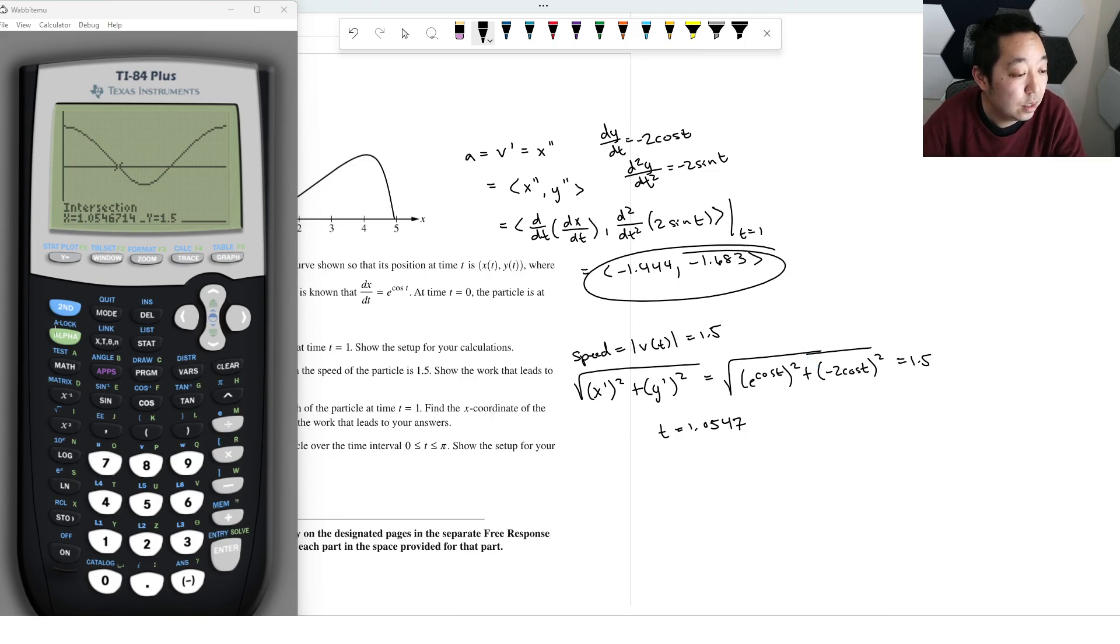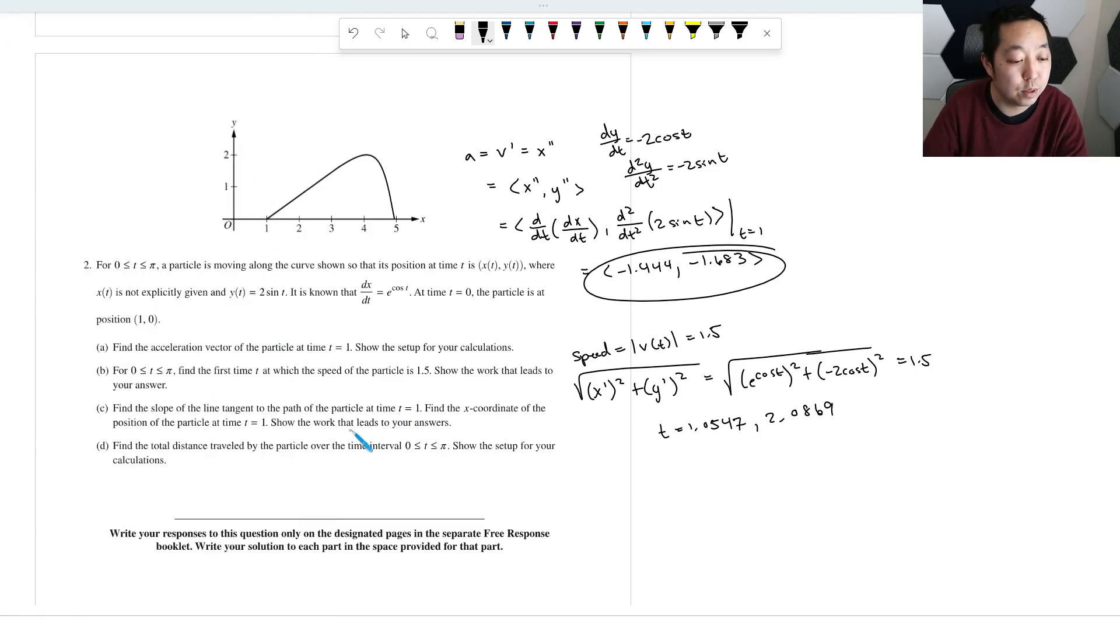Okay, and then we'll second calculate the intersect number five, first curve, second curve, and then just pick somewhere closer to that intersection point so the calculator can do its work. And that's going to be 2.0869. Now they want to know the first, oh, they want to know the first time. So the first time is just this one here. Okay, it says first time.